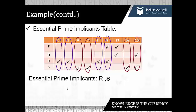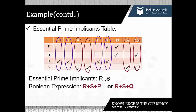After defining R and S as essential prime implicants, we are left with only minterm 13, which can be covered by either P or Q. So we take either P or Q in our final boolean expression. The final boolean expression is equal to R + S + P, or R + S + Q — we can include either P or Q.